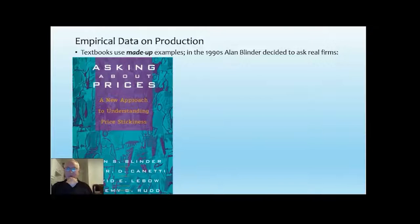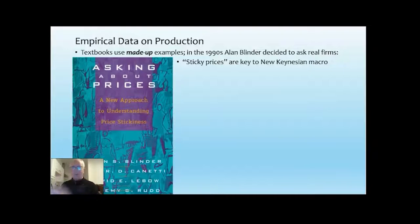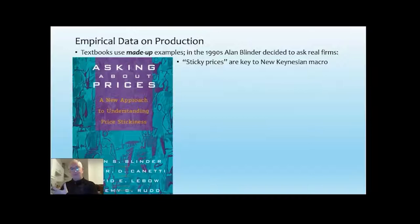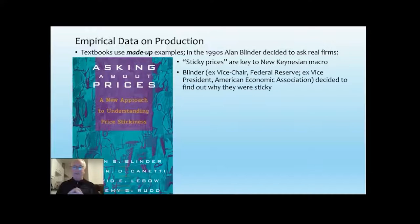The reason Blinder did the survey is that a defining difference between New Classical and New Keynesian economists is that New Classicals believe price adjustments take care of everything — the market is always in equilibrium, including the labour market during the Great Depression. New Keynesians were realistic enough not to accept that. They said there must be something preventing the market from reaching equilibrium fast enough by price adjustments, so prices have to be sticky. Blinder, one of the New Keynesians, decided to ask with a survey: why do firms have sticky prices?